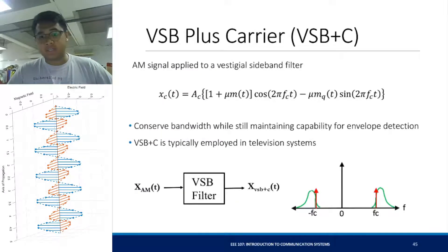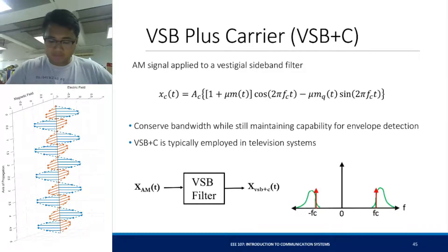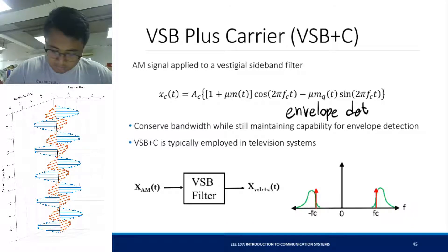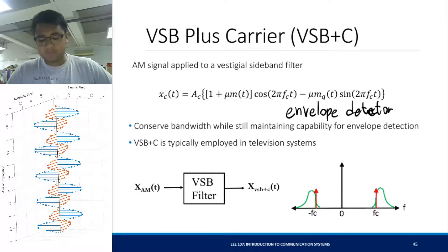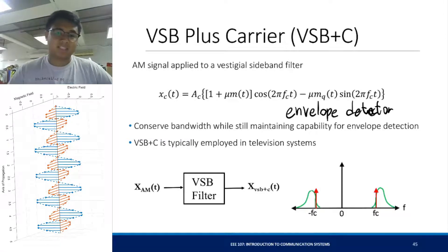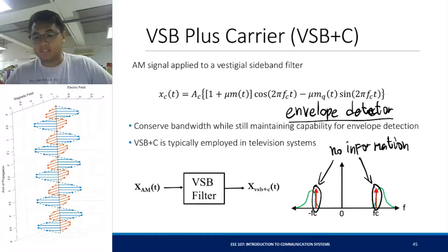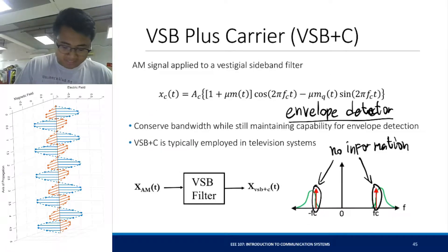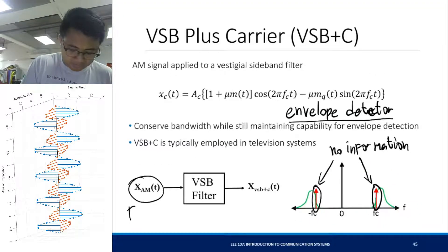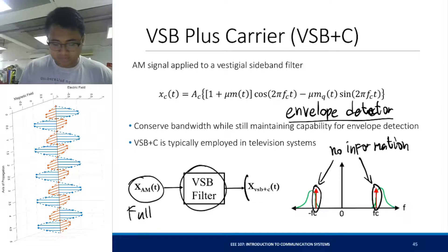You can also add a carrier for your VSB — for your vestigial sideband. If you do this, you'll be able to use an envelope detector for your demodulation. But with the trade-off, since you have a less complex receiver, you're wasting power again by introducing a carrier. This carrier does not carry any information, but it helps us detect the envelope and have a simpler receiver. To produce that, you just need to pass your full AM signal through a VSB filter and you get your VSB plus carrier.